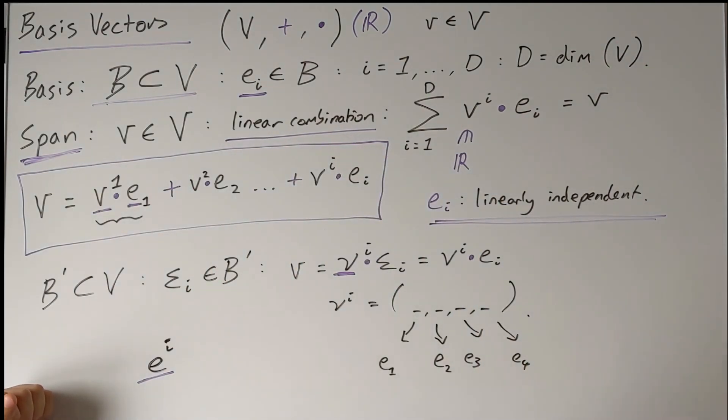And then when we go to define the dual basis, we're going to need to distinguish it from the regular basis, which is why the two types of basis have upstairs and downstairs indices.